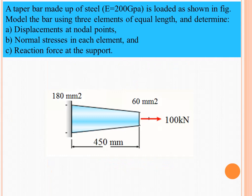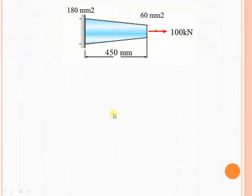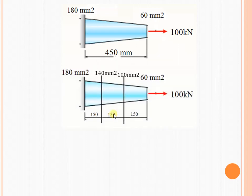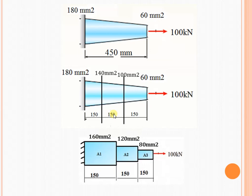We have to consider a taper bar numerical which is made up of steel and a load is applied at the free end. We have to model the bar using three elements of equivalent cross section, and we have to find the displacement, stresses and reaction. First we have to convert the given taper bar into a step bar having uniform cross sectional area, by dividing it into three elements.